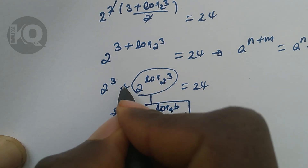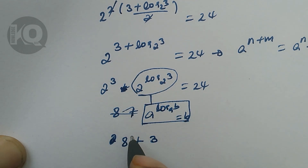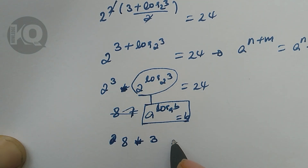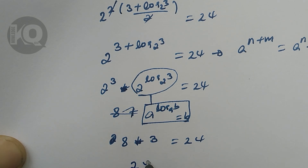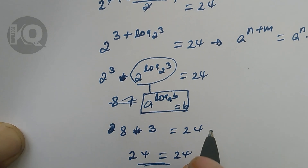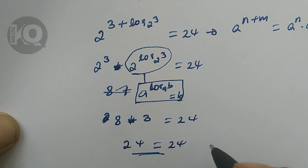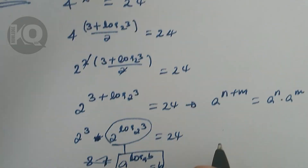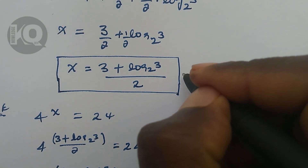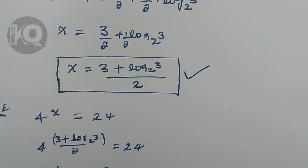8 times 3 equals 24, and 24 equals 24. So our answer is correct. Thanks for watching, have a nice time.